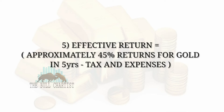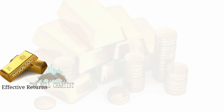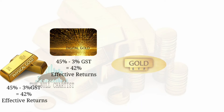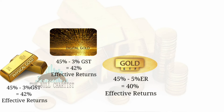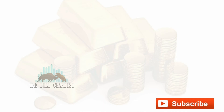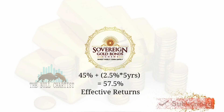Effective returns: assuming 45% returns for gold in 5 years, minus tax and expenses — 42% effective returns after tax for physical gold and digital gold; 40% effective returns after the expense ratio for Gold ETF; 35% effective returns after a 10% expense ratio for Gold Mutual Fund; Sovereign Gold Bond gives 57.5% effective returns including 2.5% interest over 5 years.